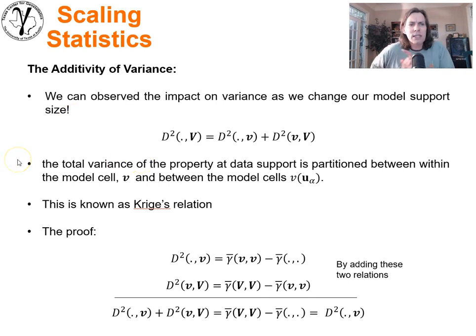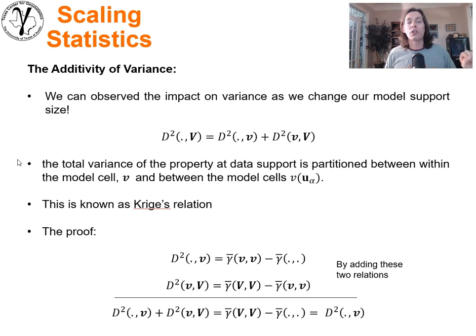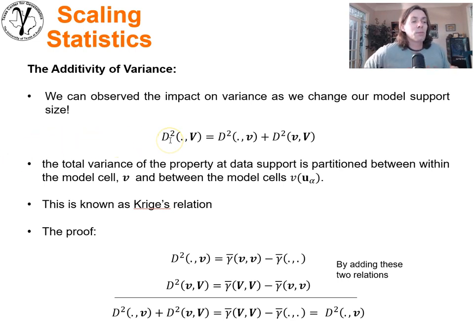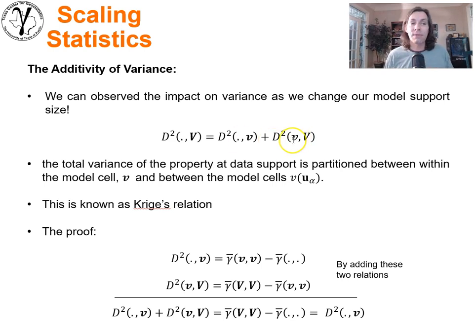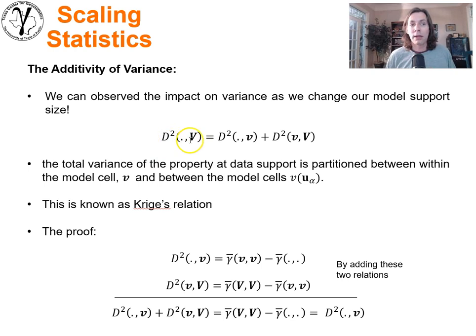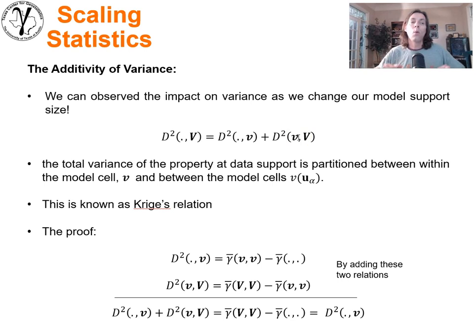This is a very powerful concept. We talked previously about the additivity of variance — partitioning into a known trend and unknown residual. Now we can discuss additivity of variance with respect to dispersion variances more generally. The dispersion variance of points within big V equals the dispersion variance of points within an intermediate volume v, plus the dispersion variance of v within big V. One way to think about it: the first term is the total variability in space, the second is variability within a model cell, and the third is variability of the model cells within the model.